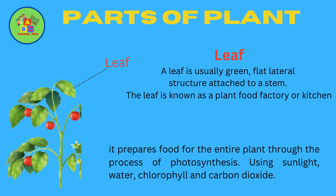A leaf is usually green, flat lateral structure attached to a stem. The leaf is known as a plant food factory or kitchen. It prepares food for the entire plant through the process of photosynthesis, using sunlight, water, chlorophyll and carbon dioxide.